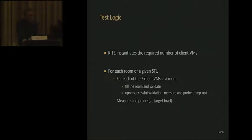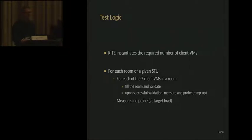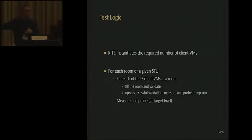Here is how we run the test. First, we instantiate all the virtual machines necessary. Then, sequentially, we create one new room and fill it with seven participants — one sender and six receivers. Once the room is filled and we validate that the video is flowing correctly for all seven participants, we add a new room and fill it with seven new participants. The test runs for several dozen minutes until we reach the target load.